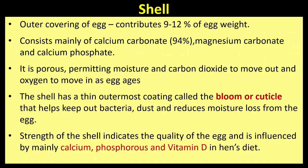Shell is the outer covering of the egg. It contributes 9 to 12 percent of egg weight, and consists mainly of calcium carbonate (94%), magnesium carbonate, and calcium phosphate. It is porous, permitting moisture and carbon dioxide to move out and oxygen to move in as the egg ages.